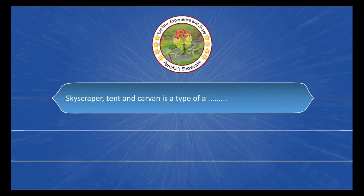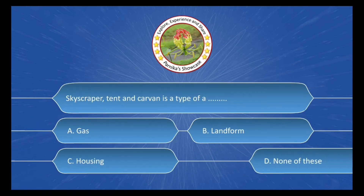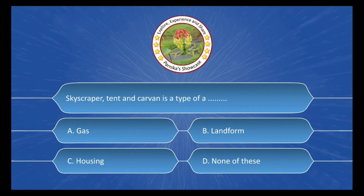Next question options are: A. Skyscraper, B. Landform, C. Housing, D. None of these. And the correct answer is Option C. Housing.